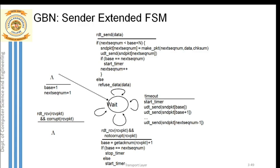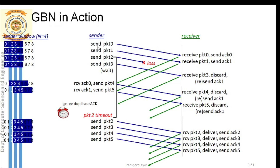In the Go-Back-N protocol, we will directly go to the flow diagram. Here you can see the sender and the receiver. Rather than sending one packet at a time, the sender is sending multiple packets. There are a total of four packets sent back to back: packet 0, packet 1, packet 2, and packet 3. Every packet must have a unique sequence number, so these four packets have sequence numbers 0, 1, 2, and 3.